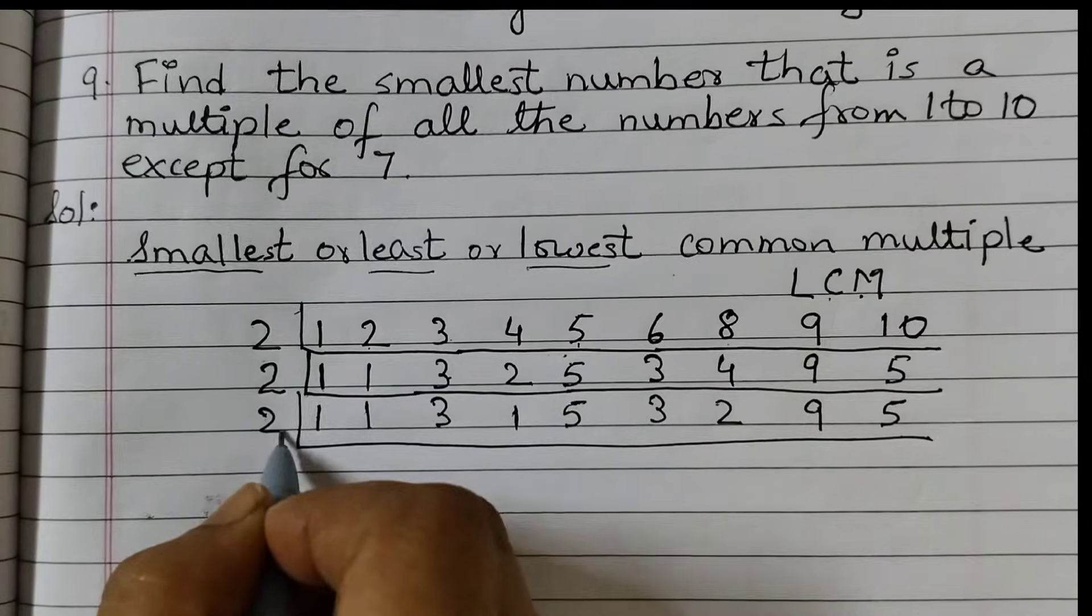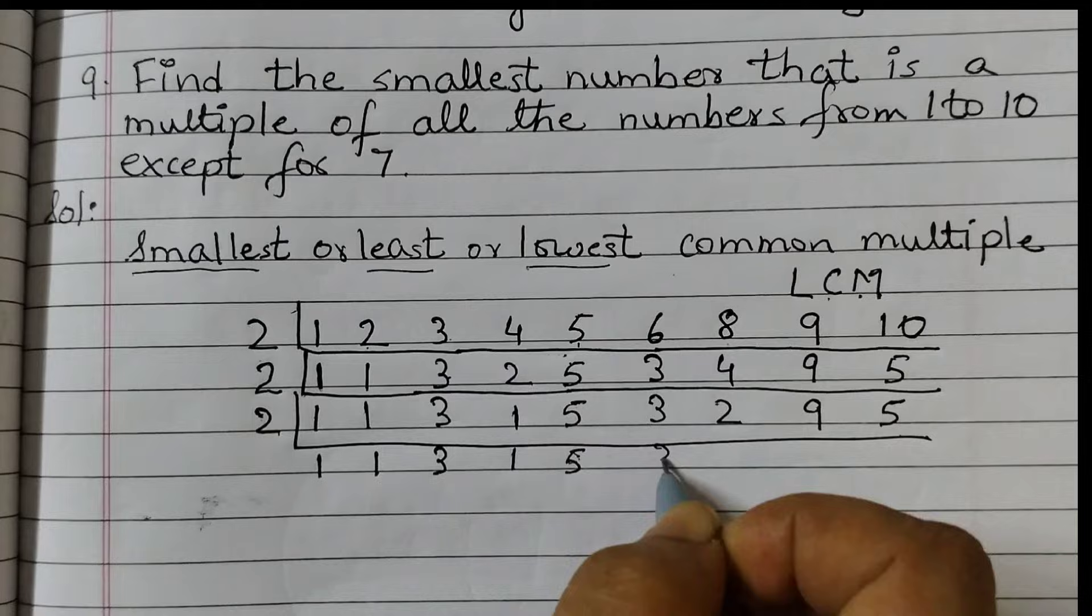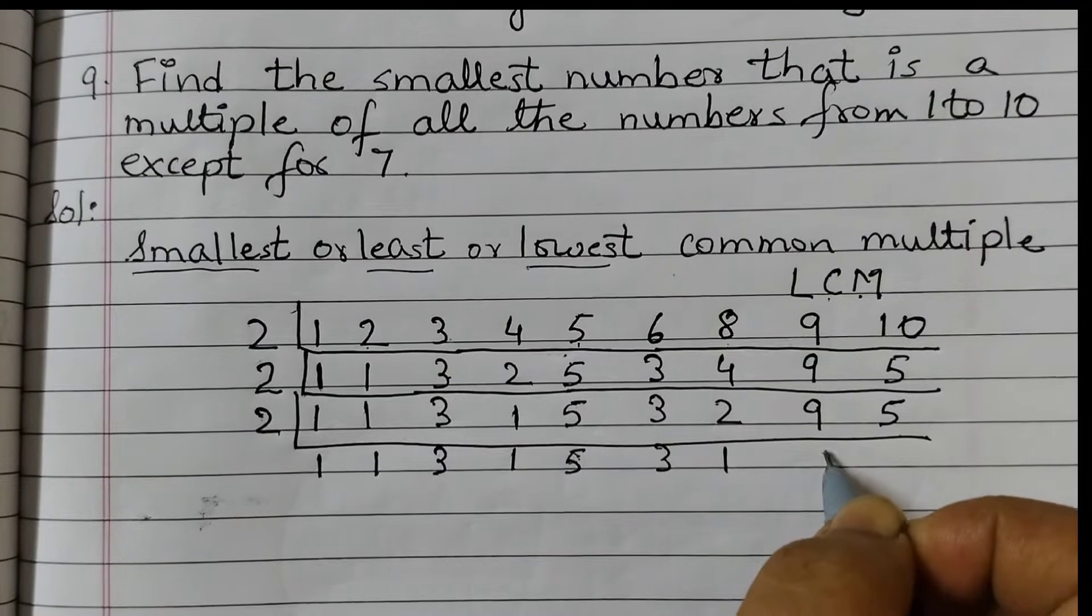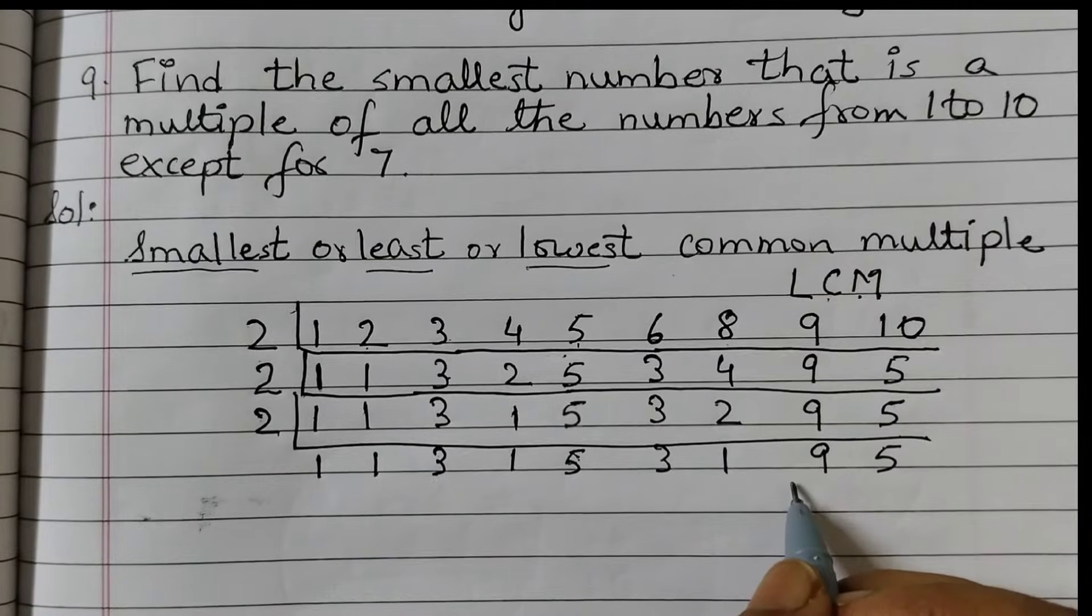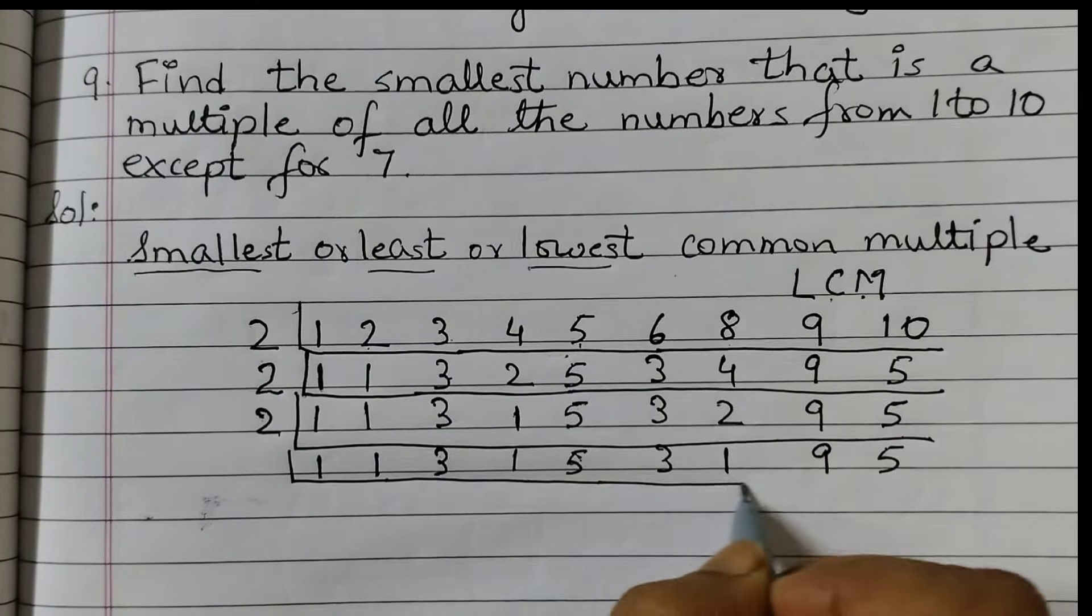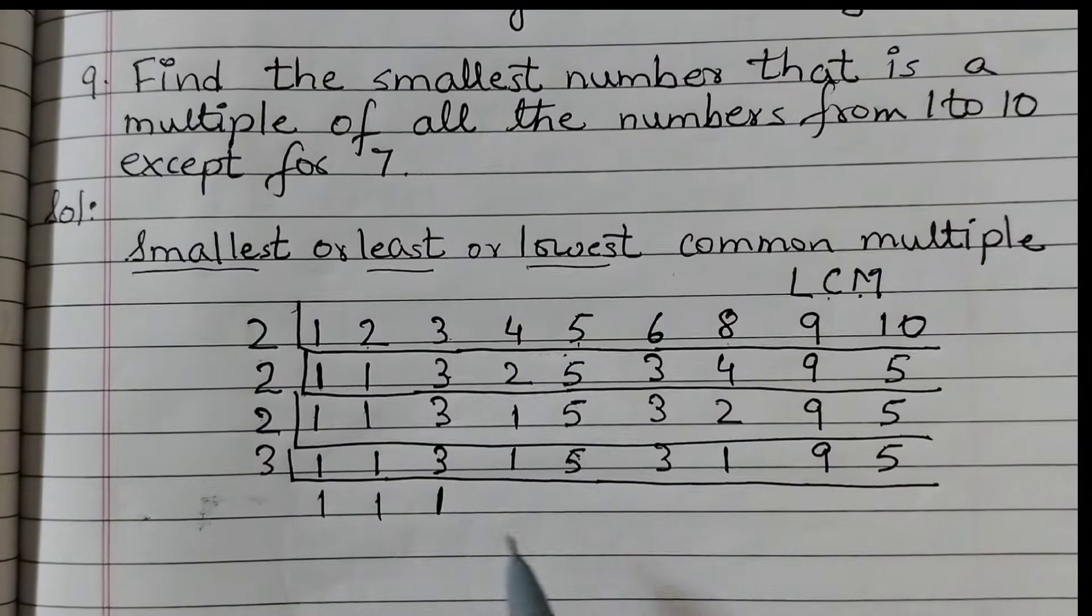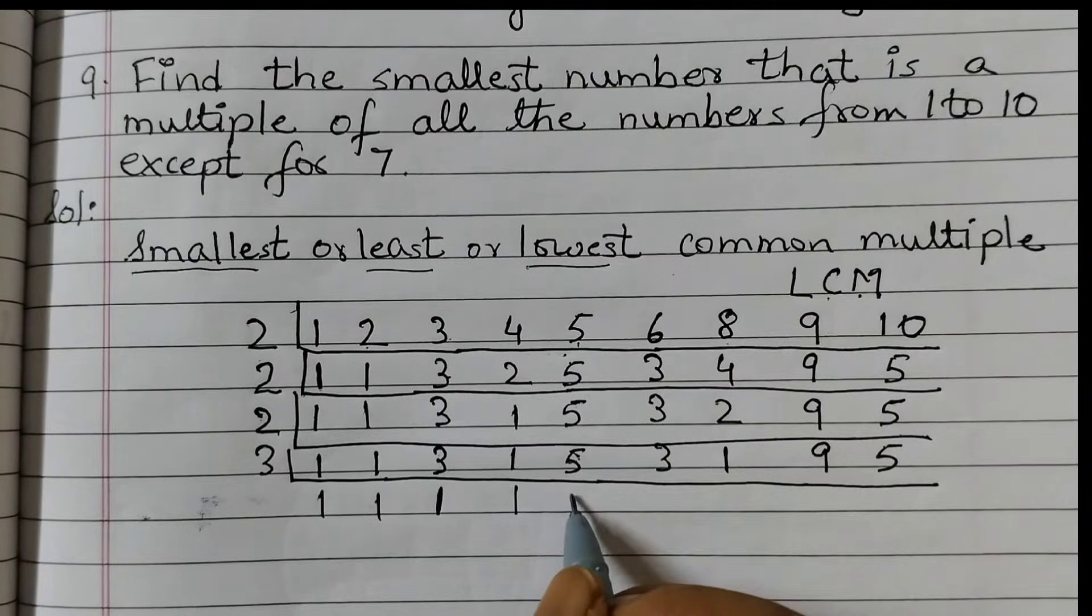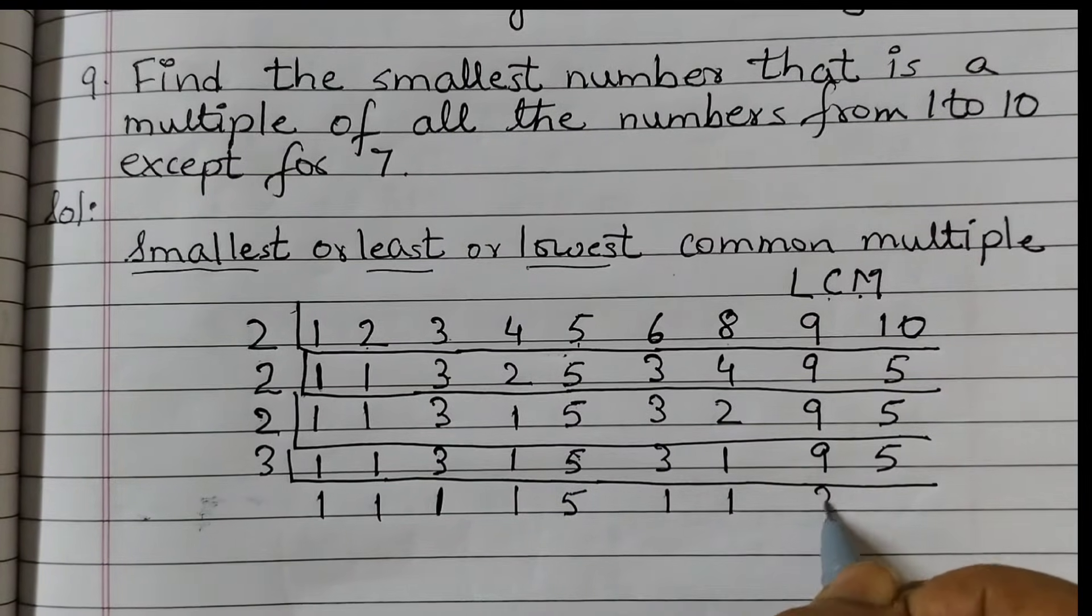So we will divide by 2: 1, 1, 3, 1, 5, 3. 2 ones are 2. 9, 5. Now you see here there are no more multiples of 2, so next number that we will take is 3. 1, 1, 1. 3 ones are 3. 1, 5 is not divisible. 3 ones are 3. 1, 3 into 3 is 9.